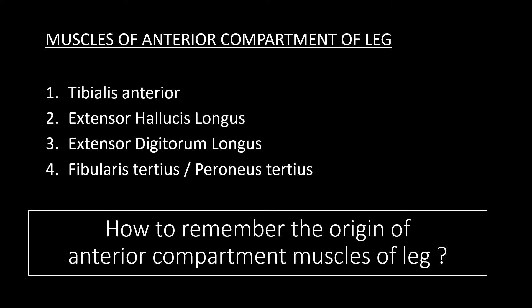Hello and Namaskaram everyone. Let's look at the origin of the muscles of the anterior compartment of the leg. In the anterior compartment of the leg, there are four muscles: tibialis anterior, extensor hallucis longus, extensor digitorum longus, and fibularis tertius or peroneus tertius.